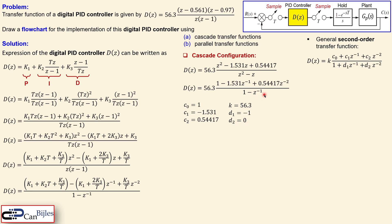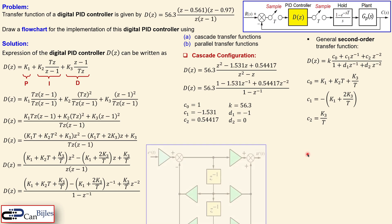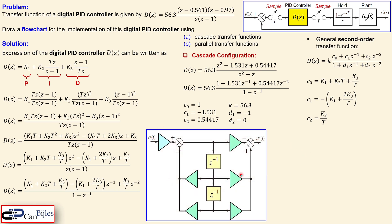The value d1 is −1, but d2 is zero because there is no z⁻² term in the denominator. Looking at the general expression you can see where c0, c1, c2, d1, and d2 are located. Now with our expression in this form, we have the second-order cascade configuration flowchart showing the gain, other gain elements, and delay blocks. We place the k's and c-values, and since d2 is zero there is no connection there.